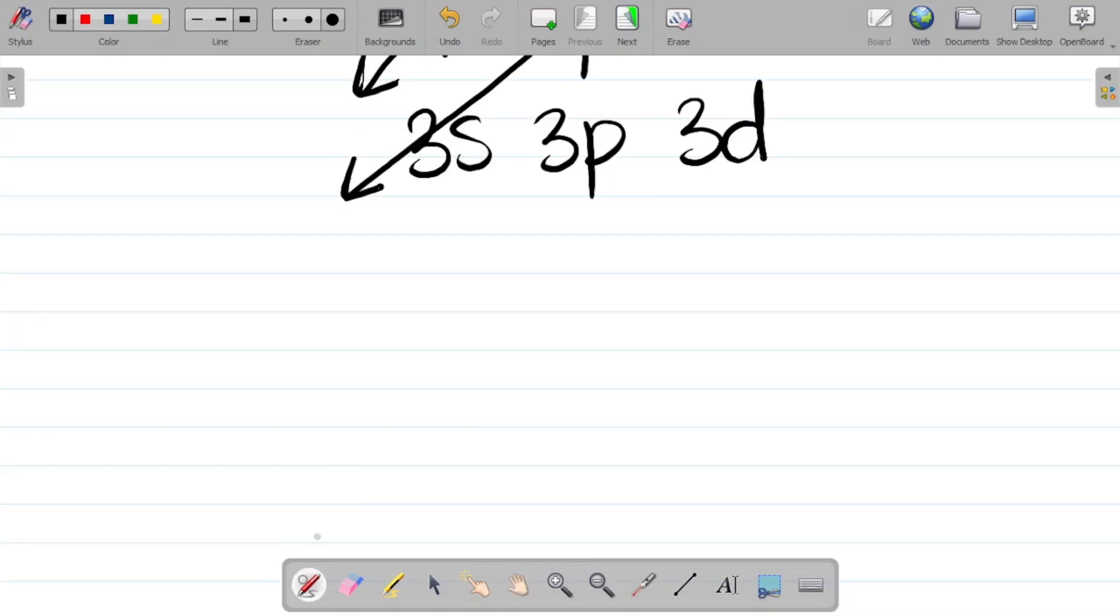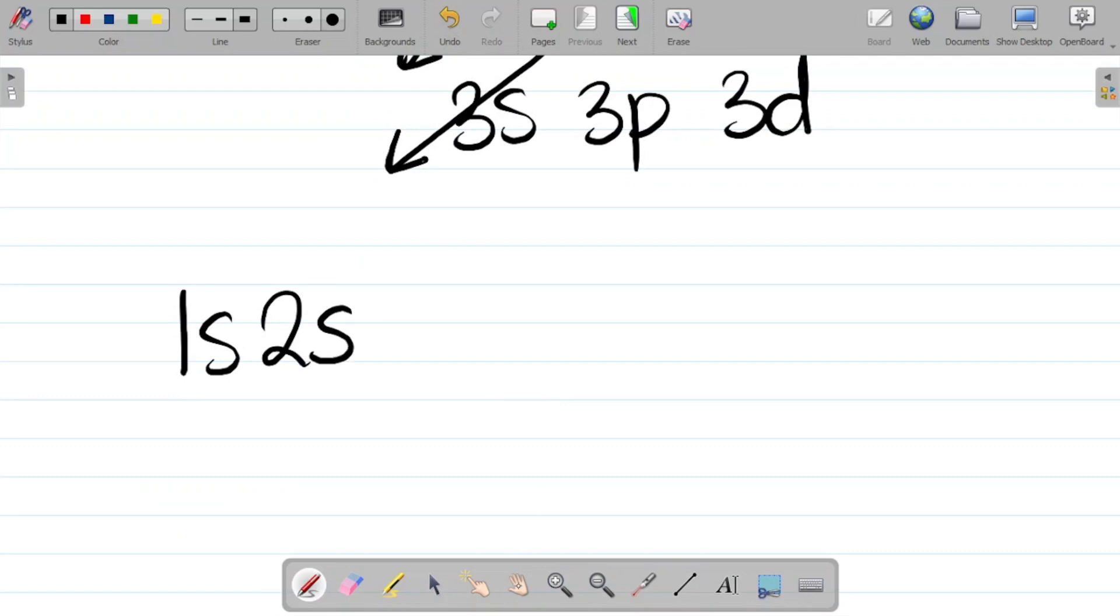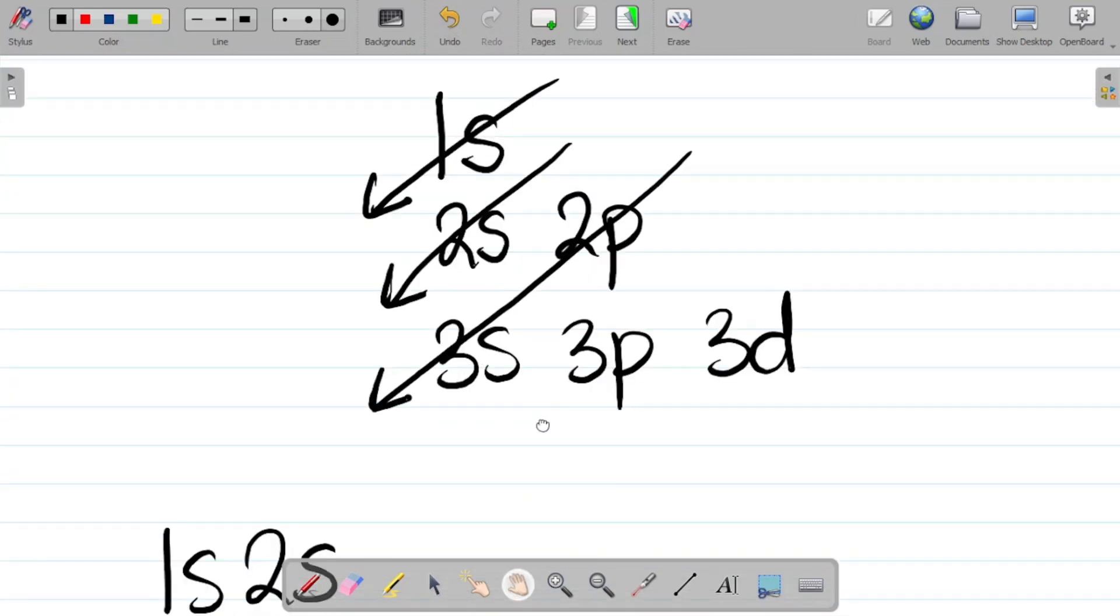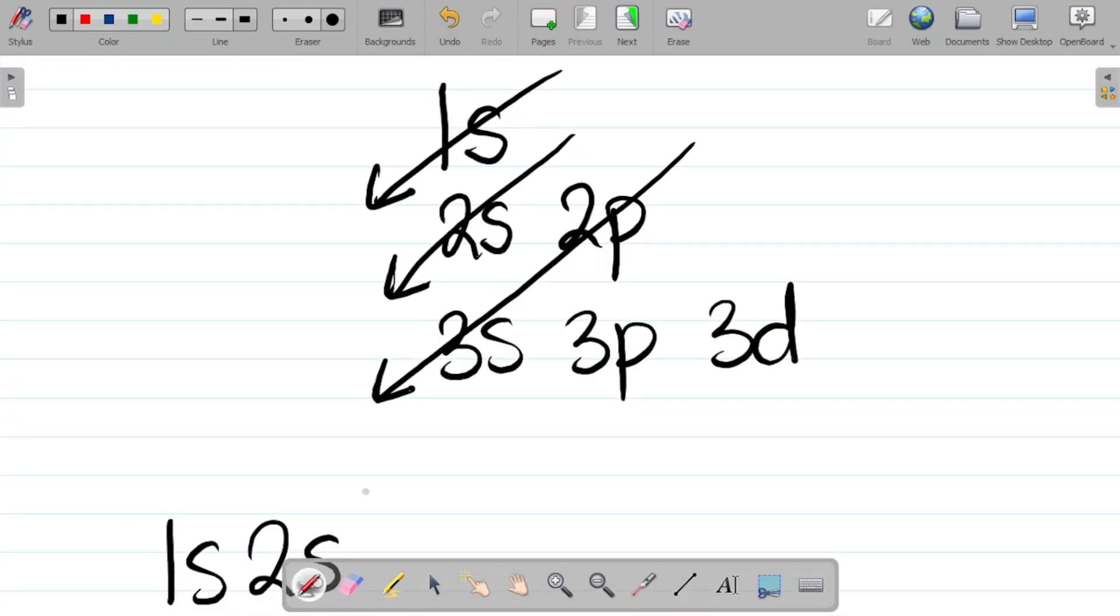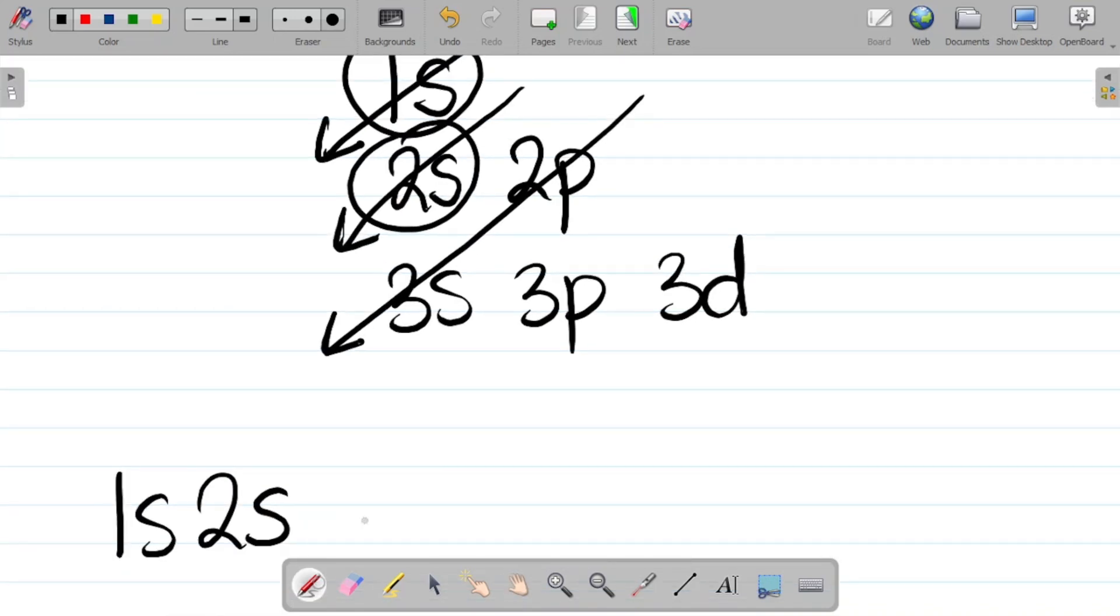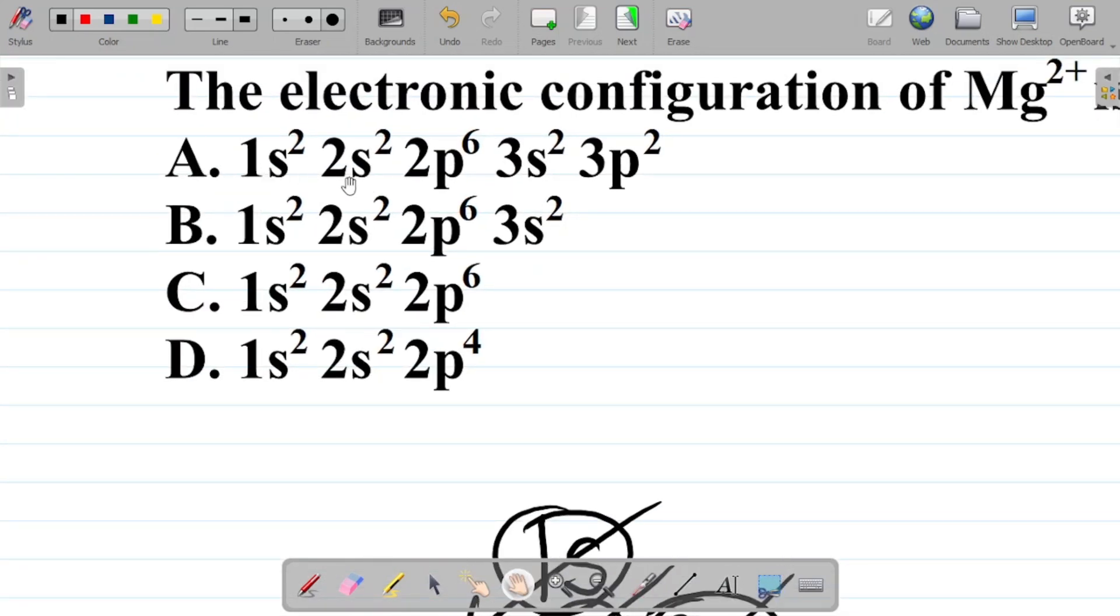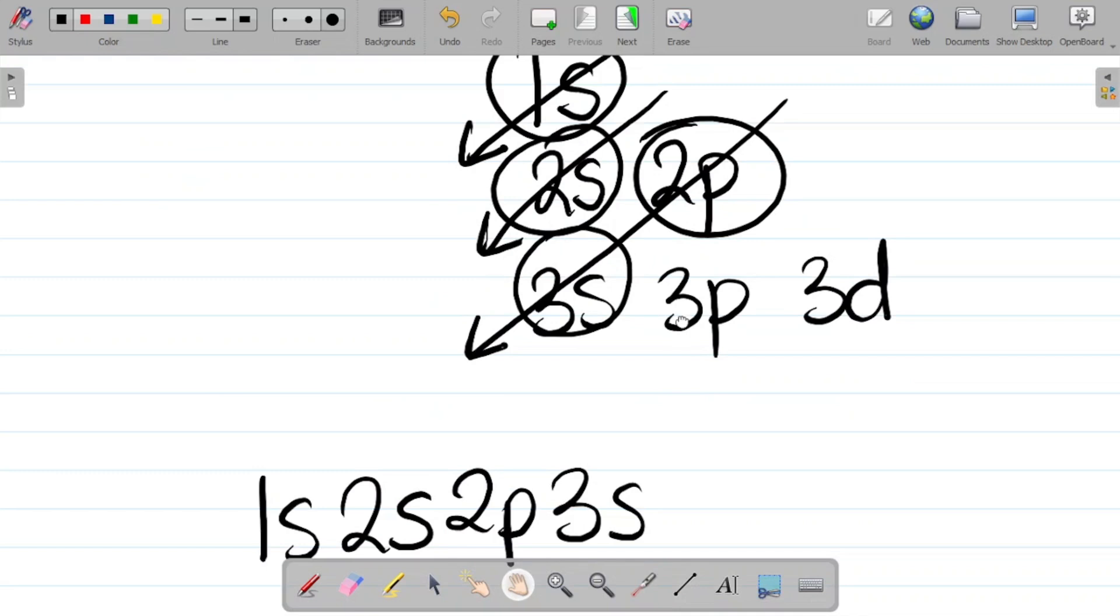So you're having this as 1s, the next up you have 2s. Following this arrow here, the first thing you have is 1s and then 2s. If I follow the arrow from this part, you have 2p before 3s. That becomes 2p and then 3s. That's why you have the arrangement as 1s, 2s, 2p, 3s, probably 3p and the likes of it.